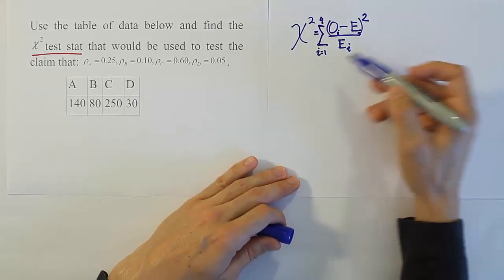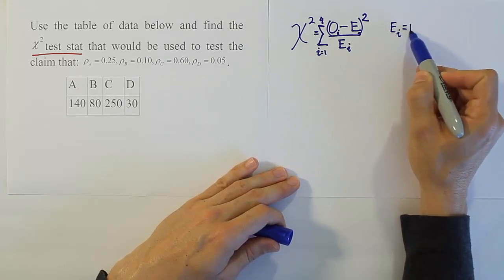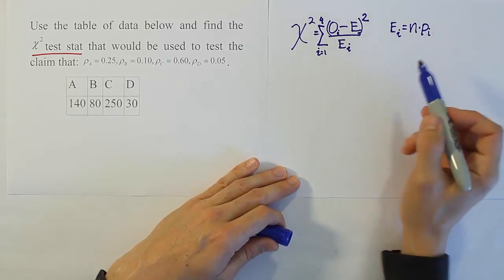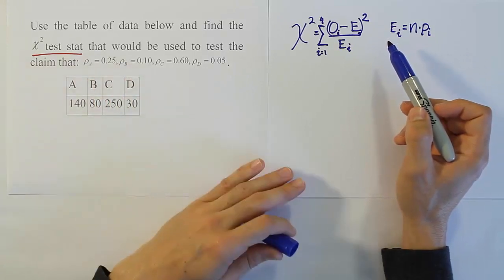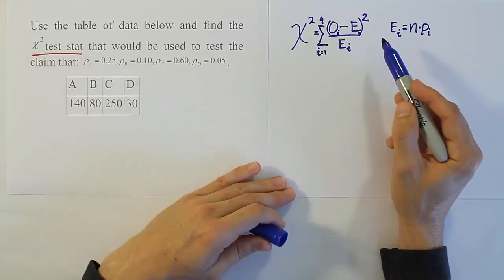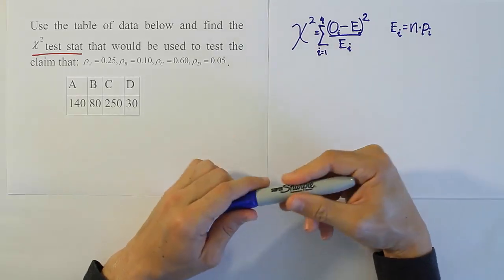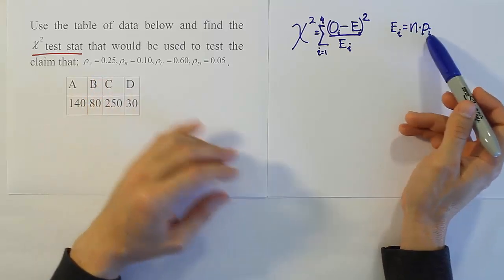But one thing I do want to say is that the expectations, remember, those E_i's are equal to n times p sub i. And before, we saw that the p's were all the same because we just had the statement that said all the probabilities were equal or all the proportions were equal to one another. Here, we have several different proportions. So, in other words, for each separate little cell, we're going to plug in the specific probability to get the expected value.